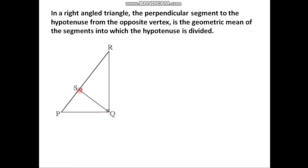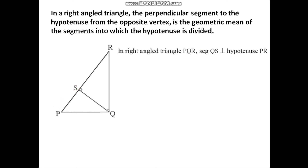It is given that in right angle triangle PQR, QS is perpendicular to hypotenuse PR. By the property of similarity of right angle triangles, if a perpendicular is drawn to the hypotenuse from the opposite vertex, we get three triangles, and those three triangles are similar to each other.